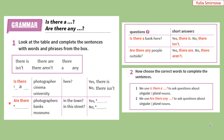Наступне: Are there any photographers in the town? — Чи є у місті фотографи? Are there any banks in the street? — Чи є на цій вулиці банки? Are there any museums in the town? — Чи є у місті музеї? Yes, there are. No, there aren't. Ці питальні речення побудовані у множині. Запам'ятайте, будь ласка, ці правила. Now let's do exercise number two.